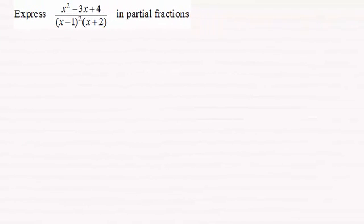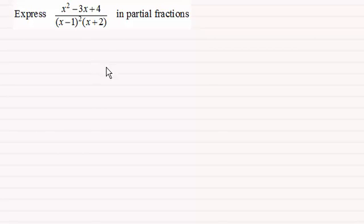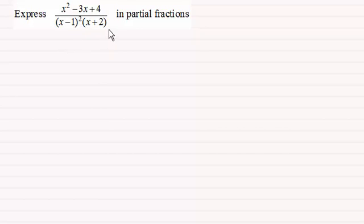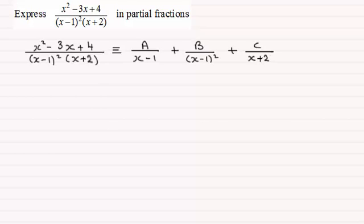Hi there, welcome to another video in my series on working with partial fractions. In this example we've got the fraction x squared minus 3x plus 4, all divided by x minus 1 all squared, multiplied by x plus 2. What we've got here is a repeated factor x minus 1 — you can see it's squared.